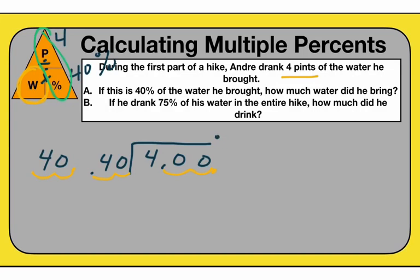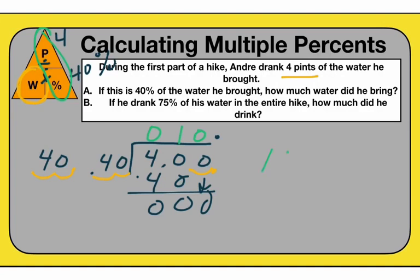400 divided by 40 — 40 does not go into 4, of course. But 40 goes into 40 one time. 40 times 1 is 40, subtract to get 0, bring down a 0, and it's going to be 10. So the answer is 10. How much did Andre bring? He brought 10 pints of water — that's your answer for part A.